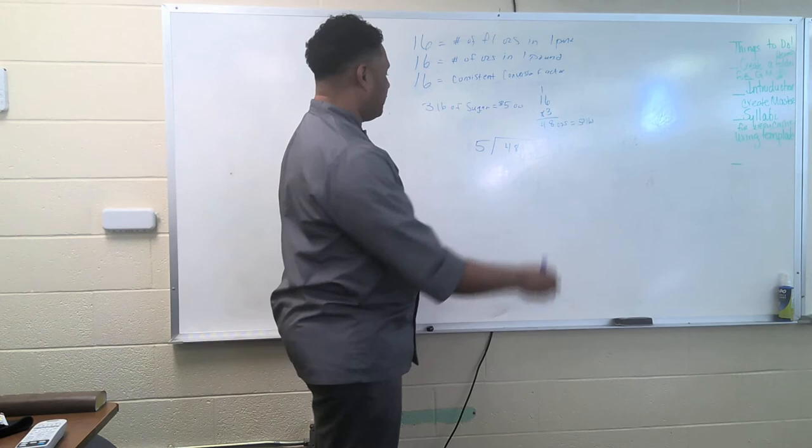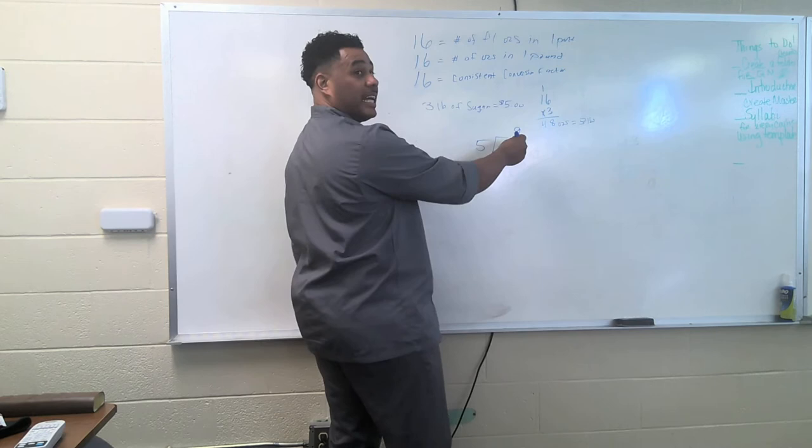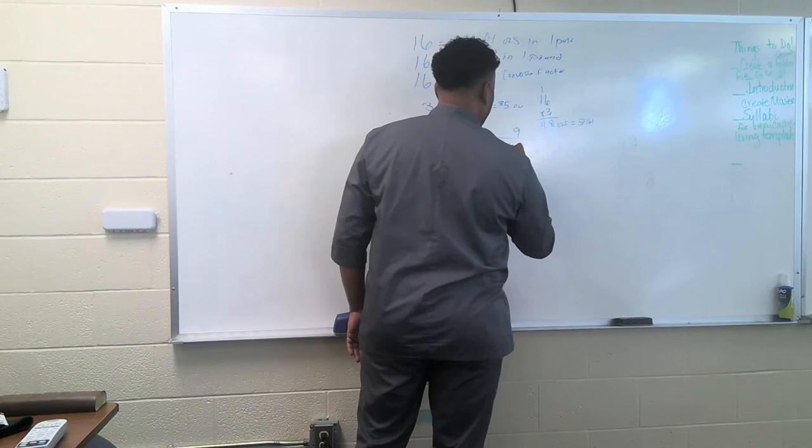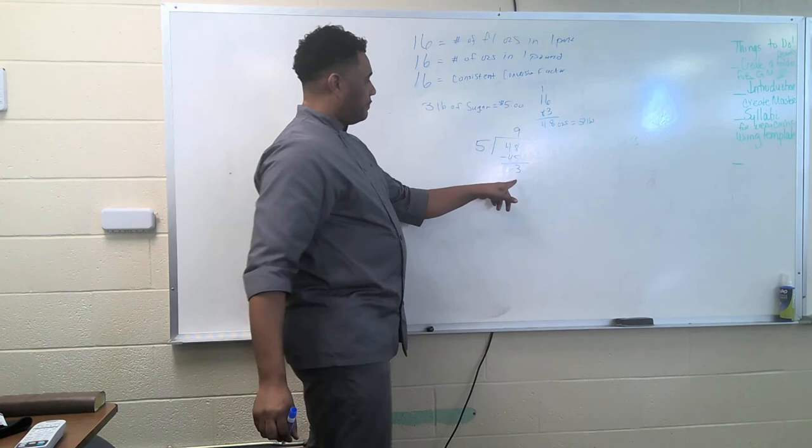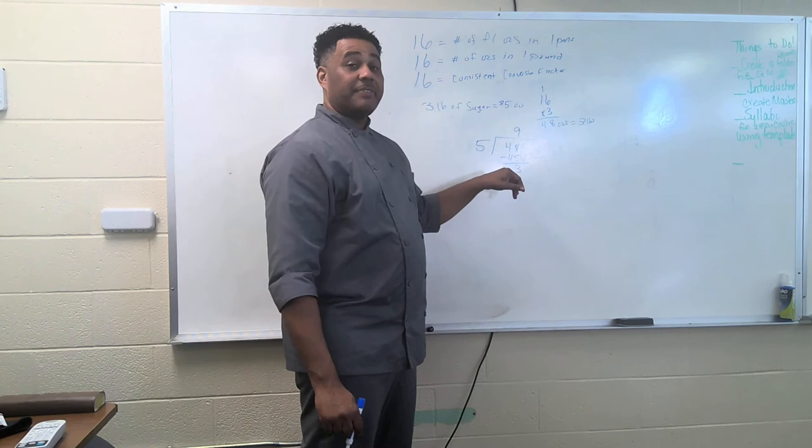And the closest factor we have with the closest multiple is the number nine. And with that, we say five times nine equals 45. So we're going to subtract what the product is of this function. So 48 minus 45 leaves three. Now from there, we know that five cannot equally divide into three and leave a whole number.